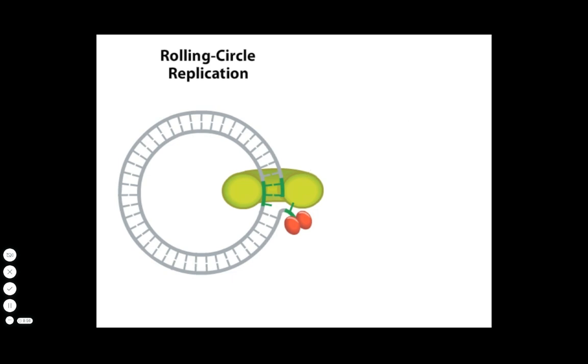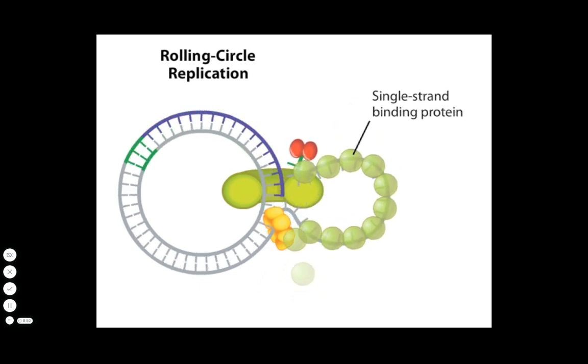The REPA initiator protein recruits a helicase that unwinds the DNA. As the DNA unwinds, it becomes coated by single-strand DNA binding proteins.